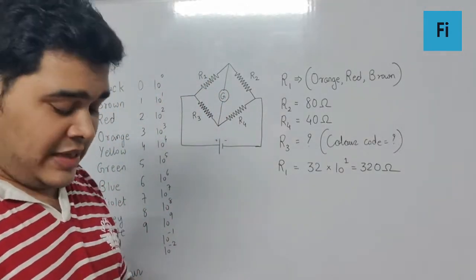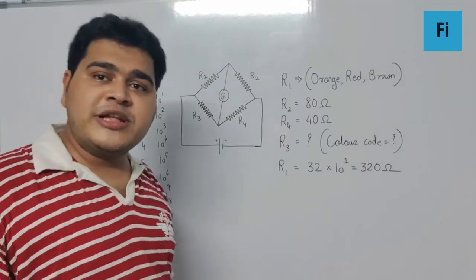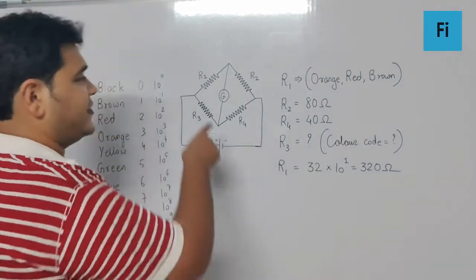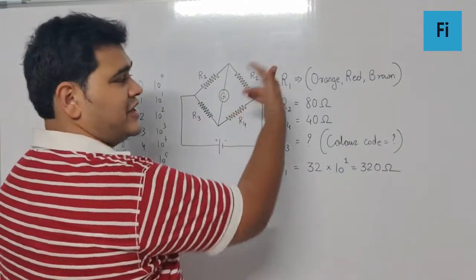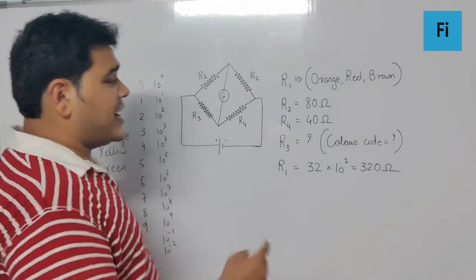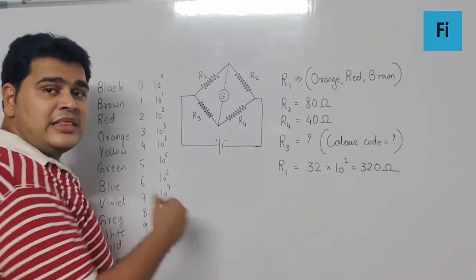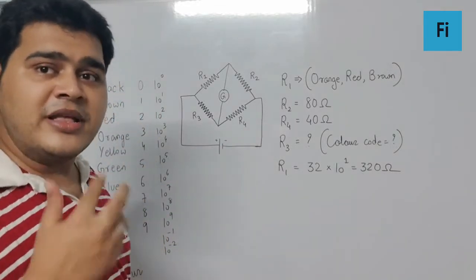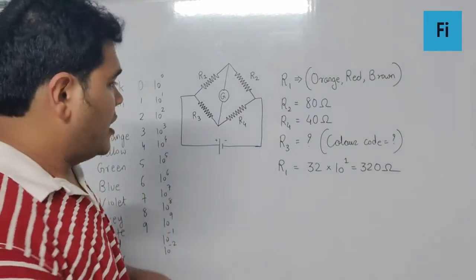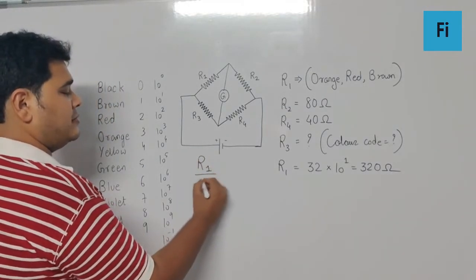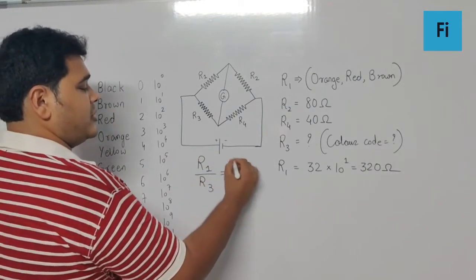Now we can use the balanced Wheatstone network formula. The ratio of the resistance on one side is equal to the ratio of the resistance on the other side to find the value of R3, and then we can find the color code for it in the reverse process. So can I go for R1/R3 = R2/R4?